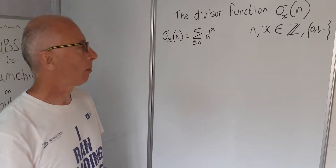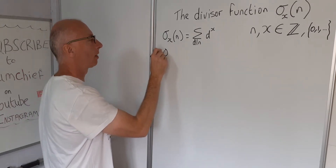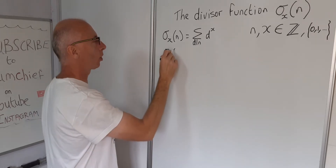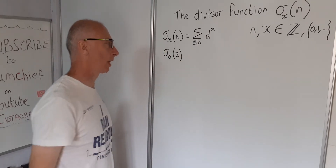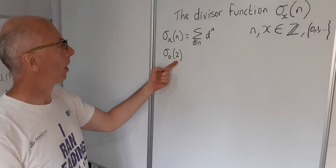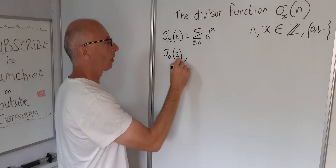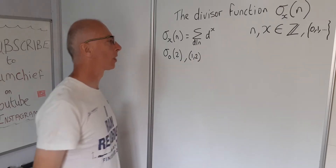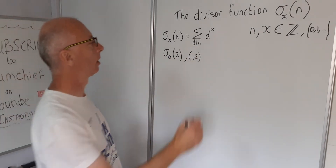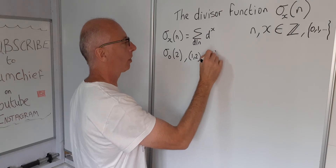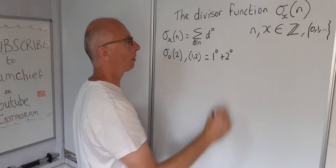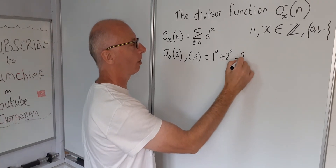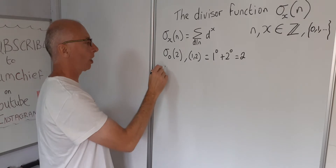Let's start with an example using X=0 and n=2. The divisors of 2 are 1 and 2, so we get 1 to the power of 0 plus 2 to the power of 0. Since anything to the power of 0 is 1, that equals 2.